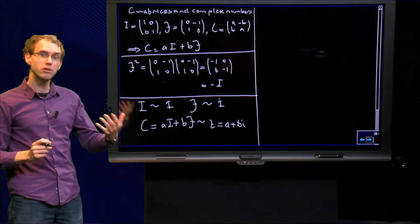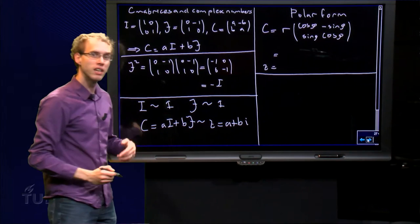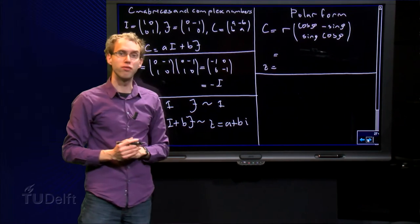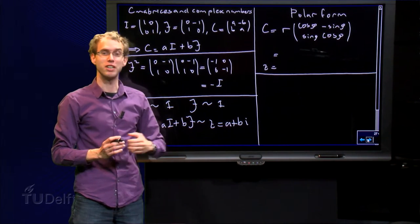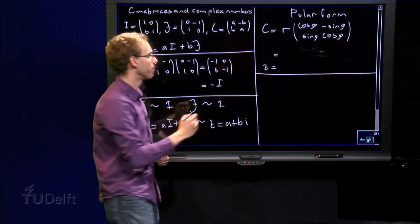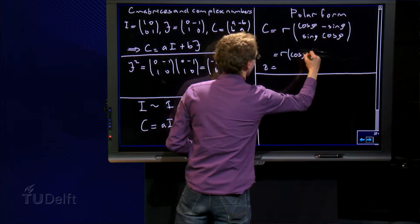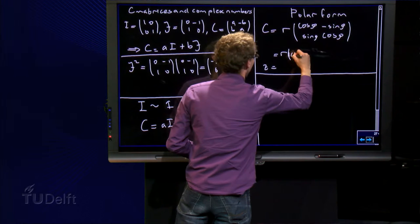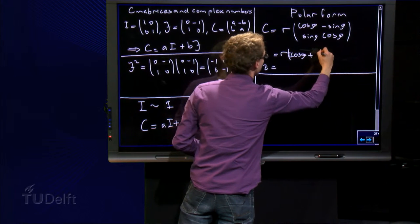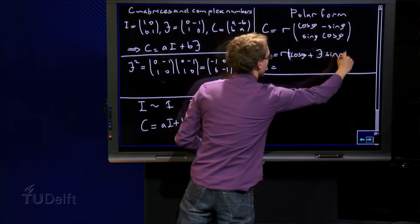You can also see that, for example, if we look at the polar form. If we look at the polar form of a scaling rotation matrix C, we can rewrite C in the form R times cos φ times I plus J times sin φ.